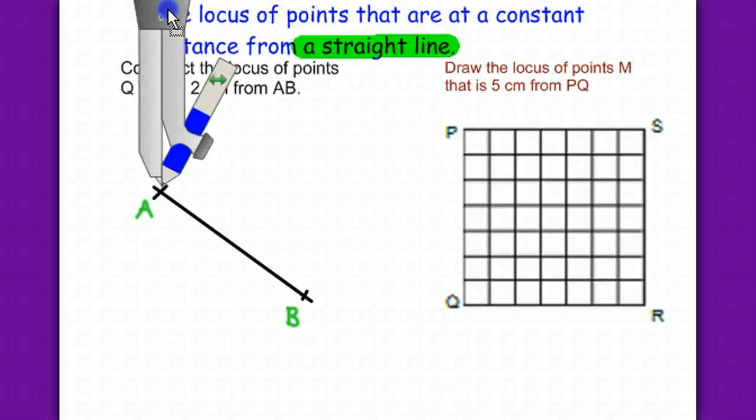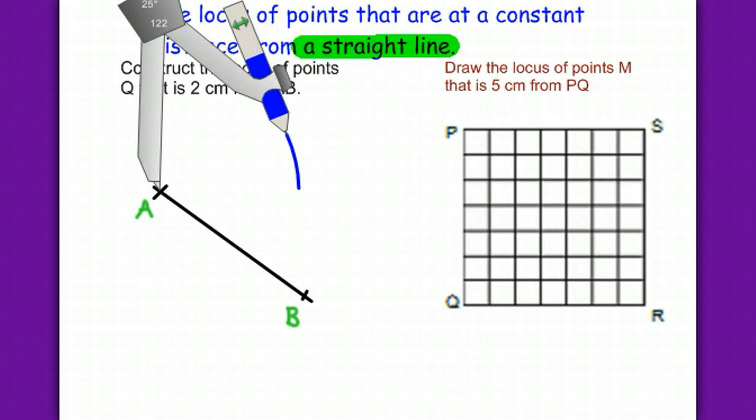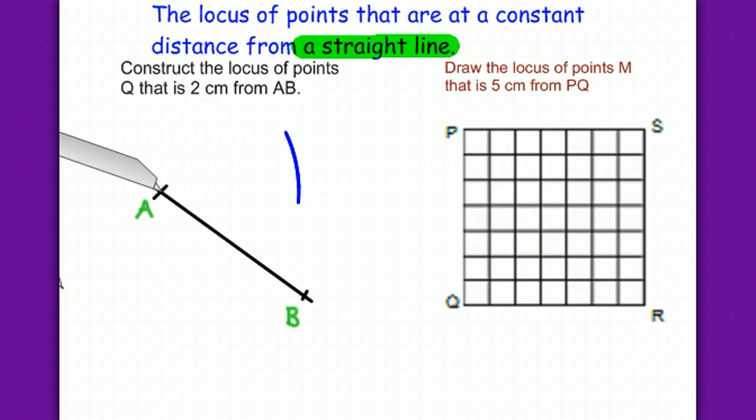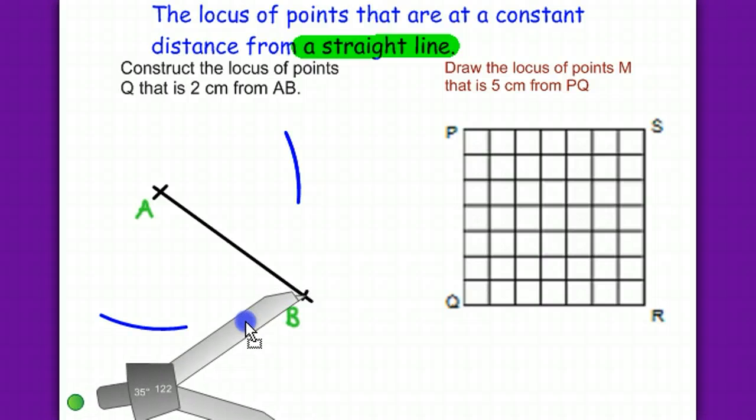First we construct a perpendicular bisector to line AB. Put the compass at A, open and make a curve here, and another curve right here. Then move the compass to B.